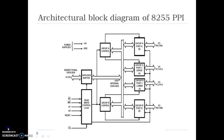The architectural block diagram of 8255 consists of three input-output ports, namely Port A, Port B, and Port C. Port A and Port B are 8-bit input-output ports, whereas Port C can be divided into two parts, Port C upper and Port C lower, both consisting of four pins. The Group A control is used to control the functioning of Port A and Port C upper, whereas Group B control is used to control the functioning of Port B and Port C lower.